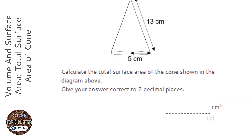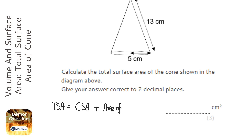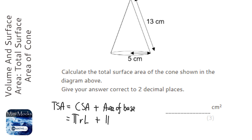So we asked for the total surface area. The total surface area is the curved surface area plus the circle at the bottom, which we can call the base. The curved surface area is πrL, and the area of the base is πr². The L represents the slanted height — the actual height hits the base at 90 degrees, while the slanted height goes up the side of the cone.